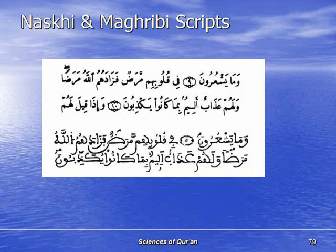This script is called the Maghribi script. People who can read Naskh can kind of read the Farsi script and vice versa, but this one is very difficult — don't even try without training. For comparison, I put 'fi quloobihim' from Surah Al-Baqarah. This is in the Maghribi script. If you notice, the letter that looks like fa is actually qaf in this script.